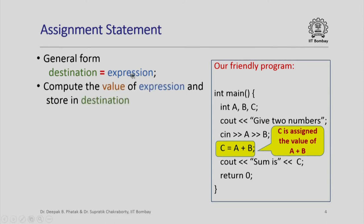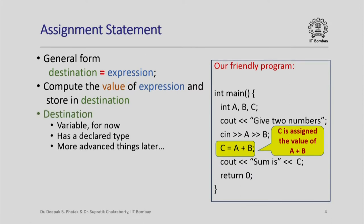So what does an assignment statement do? It computes the value of an expression and stores it in the destination. The destination for now is going to be a variable, which has a declared type. Later in the course we will see that the destination of an assignment statement can also be more advanced constructs beyond variables.